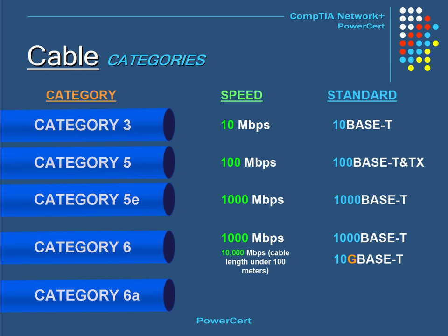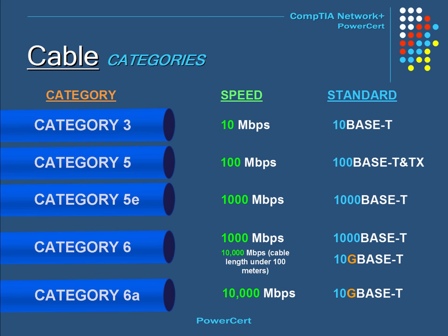Category 6A, or augmented, has a maximum speed of 10,000 megabits per second and is used on 10GBASE-T networks. Unlike Category 6, this has a maximum length of 100 meters.